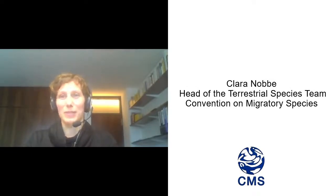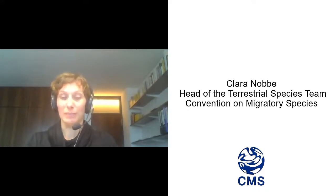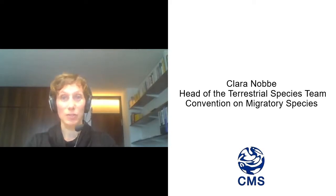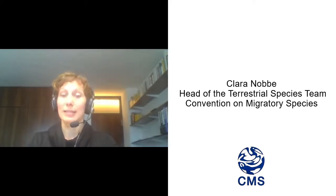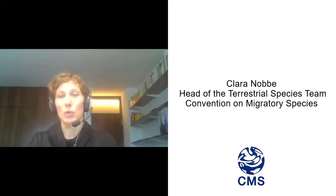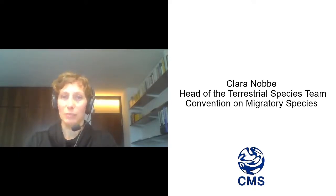CMS has some very important roles to play, both at the global and national level. At the global level, CMS brings together the range states of those species that are listed on CMS, and it makes sure that those range states, which are parties to the convention, then take measures to conserve the species and their habitats. So like CITES, CMS is a species-based convention.